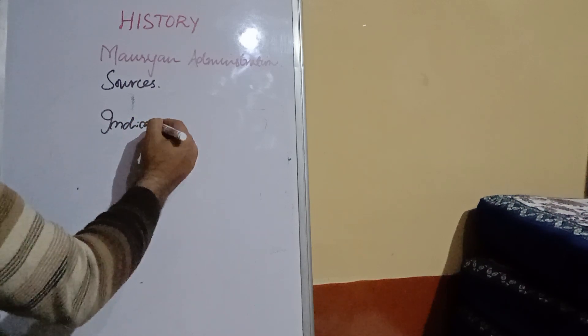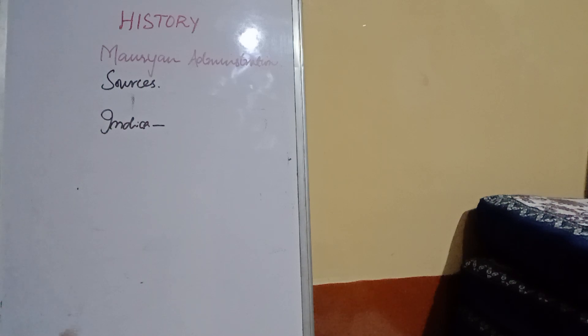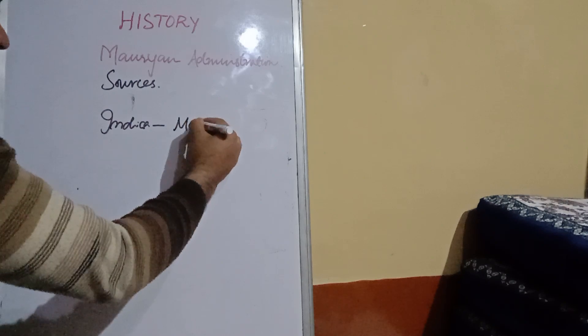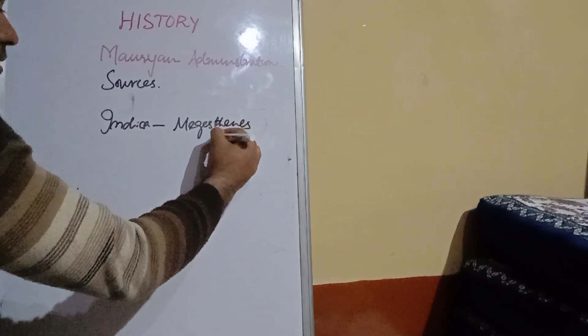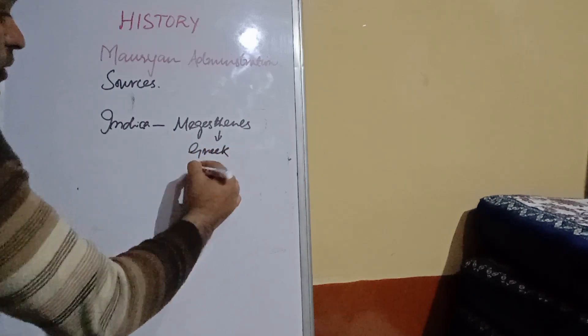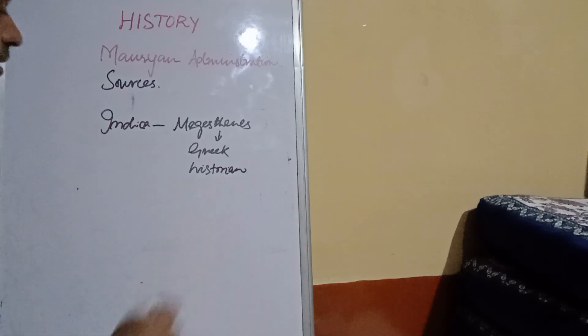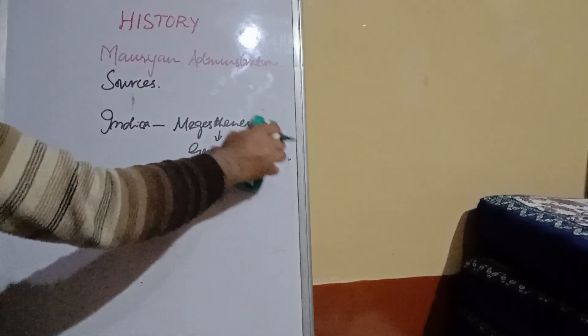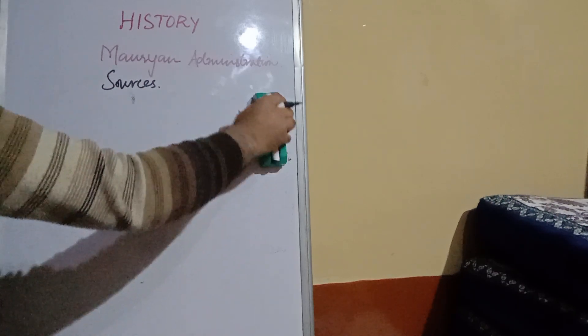Number two is the Indica by Megasthenes. The Indica also gives vast knowledge about the Mauryans. It was written by Megasthenes, a Greek historian, who gives us information about the Mauryans.